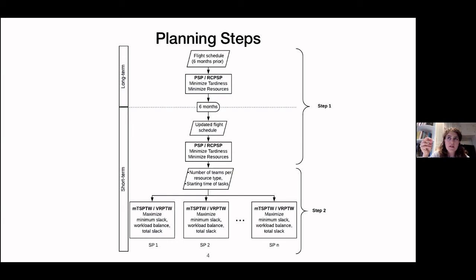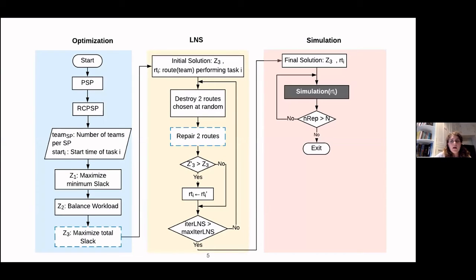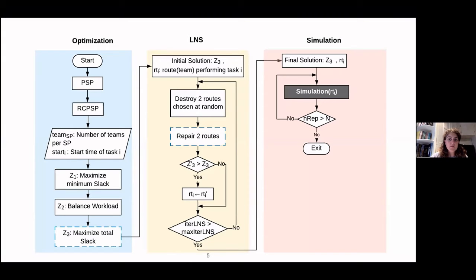For us, it's important to maximize the minimum slack so that teams have enough time going from one task to another, allowing recovery from small delays. We also try to balance the workload across teams. After that, we maximize the total slack. Our approach is lexicographic: we start with the resource-constrained project scheduling problem (RCPSP), then move to a VRP or TSP. For maximizing total slack, since we cannot get a solution in reasonable time, we use large neighborhood search.